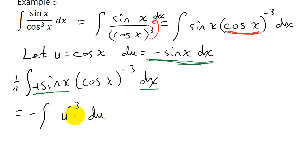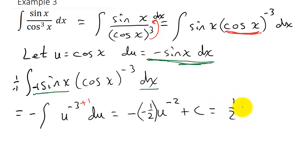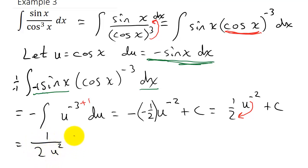Now I have the power rule. I add 1 to the exponent, giving u to the negative 2, then multiply by the reciprocal of the new exponent, times negative one-half, plus c. This gives me one-half u to the negative 2 plus c. Since the exponent is negative, I move it to the denominator, changing the sign: 1 over 2u squared plus c.